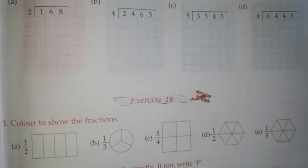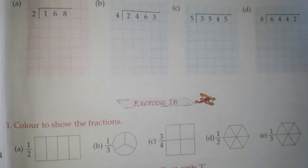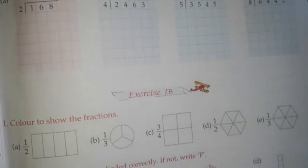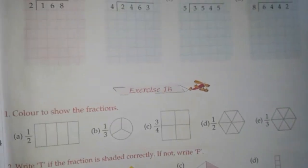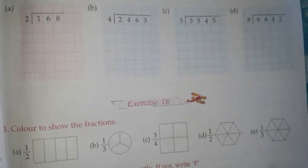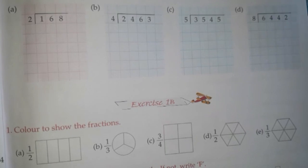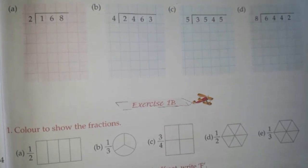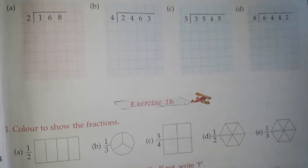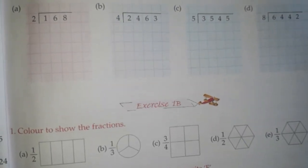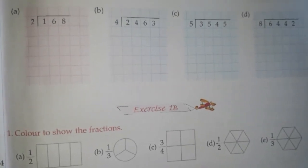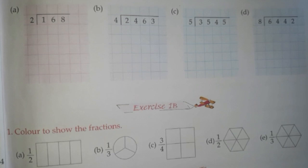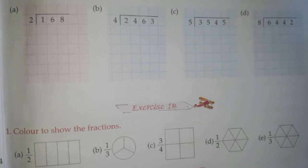The next question is question number 13. We have to divide again. In this question we are dividing three-digit numbers and four-digit numbers with a one-digit number. The first question is 168 divided by 2.